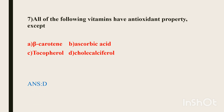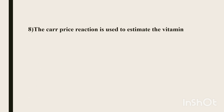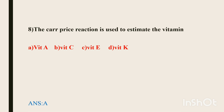Eighth question. The Carr Price reaction is used to estimate which vitamin? Options are vitamin A, C, E, K. The correct answer is vitamin A. The Carr Price reaction uses a chloroform solution with antimony trichloride. If vitamin A is present, a blue color appears that fades away in about 10 seconds. So vitamin A is detected by the Carr Price reaction.